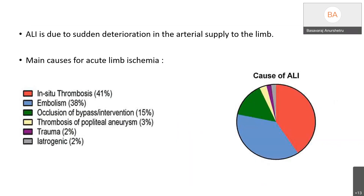Acute limb ischemia, as we all know, is due to the sudden deterioration in the arterial supply to the limb. The main causes of acute limb ischemia are thrombosis, embolism, occlusion of bypass or intervention stents, thrombosis of aneurysms, trauma, and iatrogenic causes.